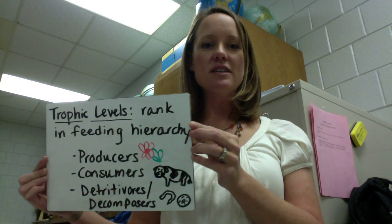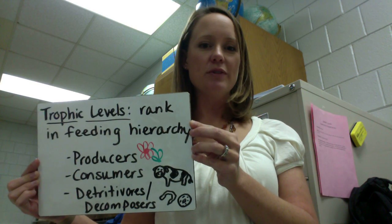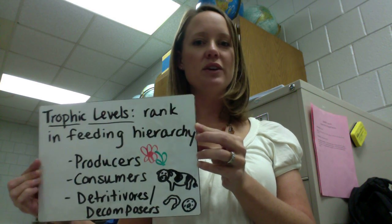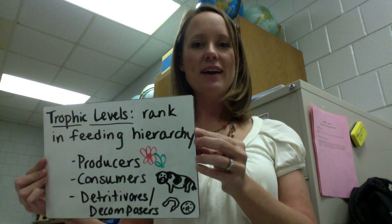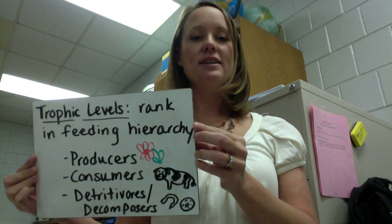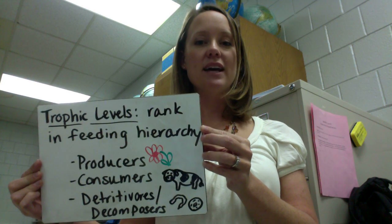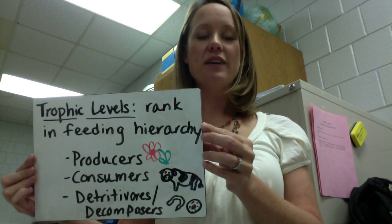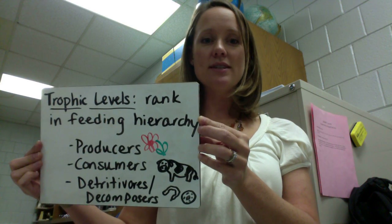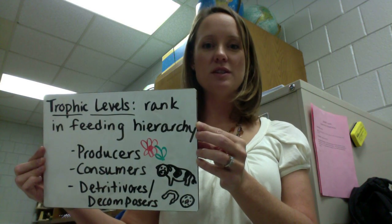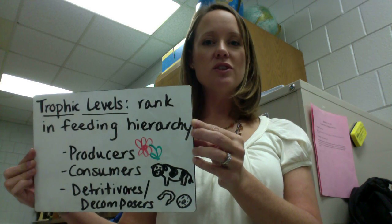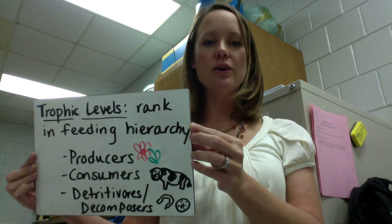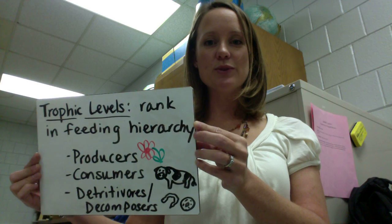The first is trophic levels. When we do food chains, a trophic level is the rank that an organism has in the feeding hierarchy. Those organisms are going to fit into one of three categories: they're either going to be producers, consumers, or the third category, detritivores and decomposers.